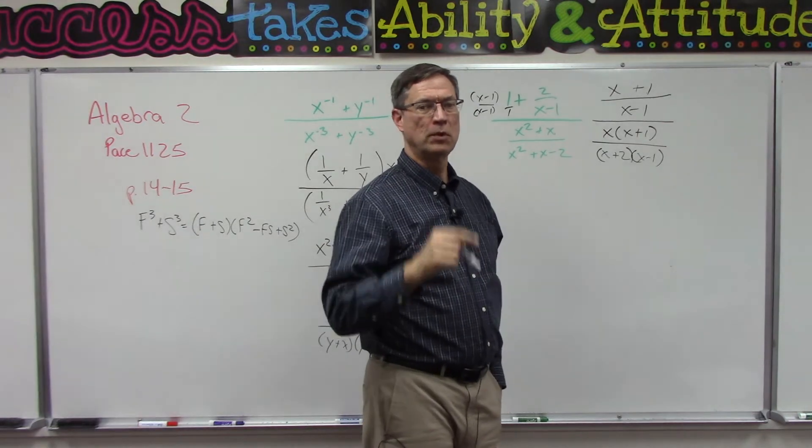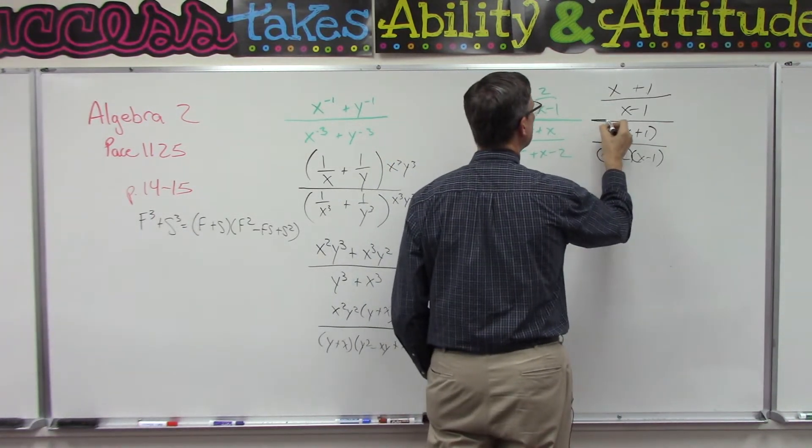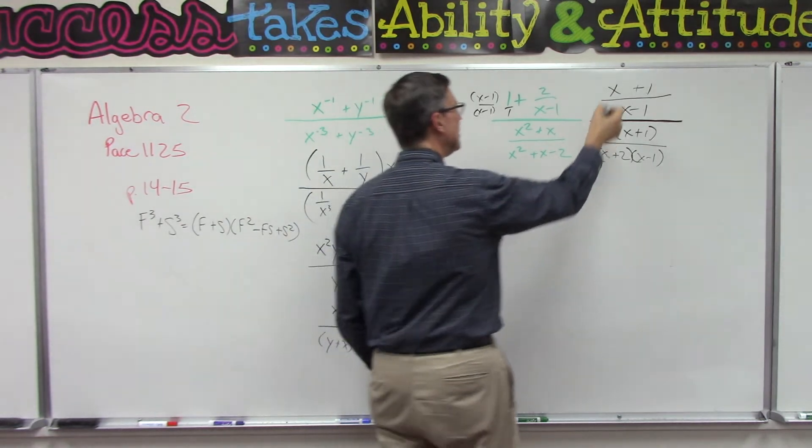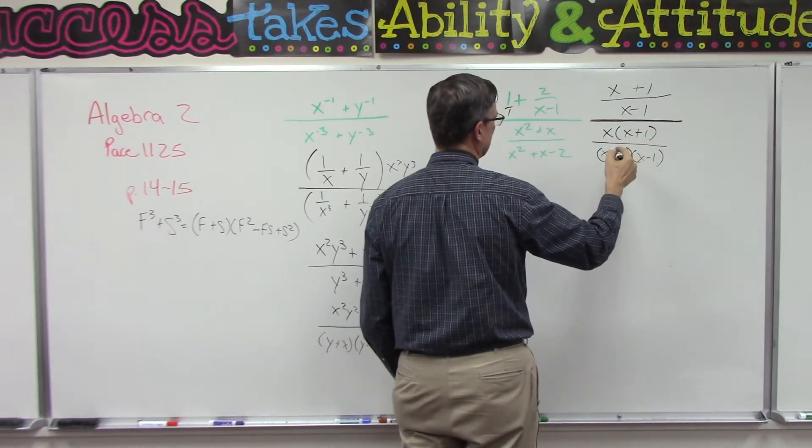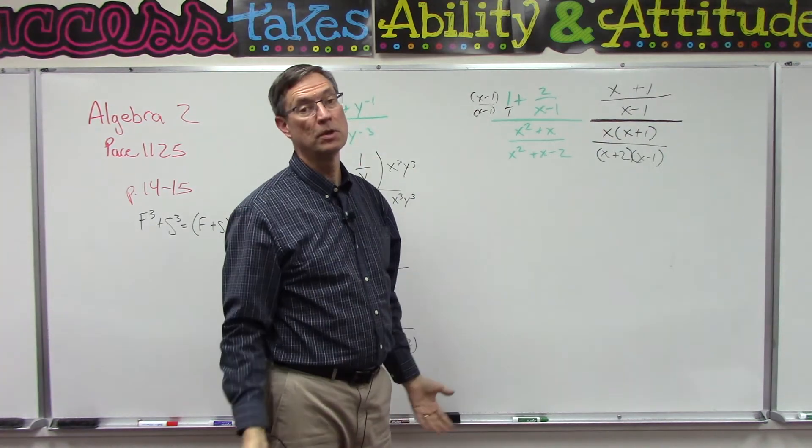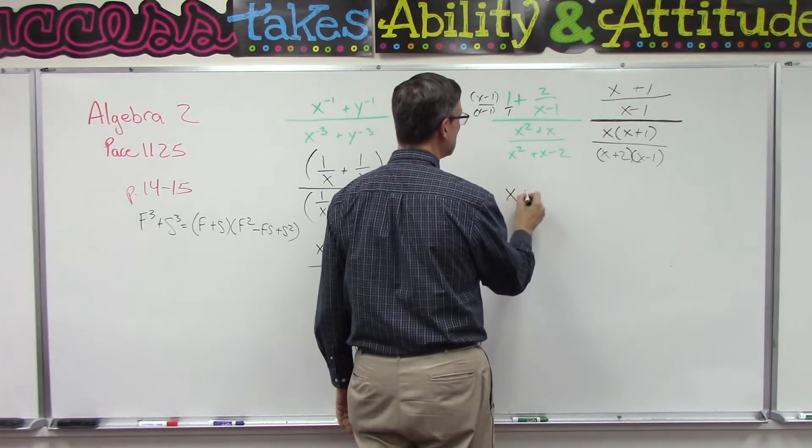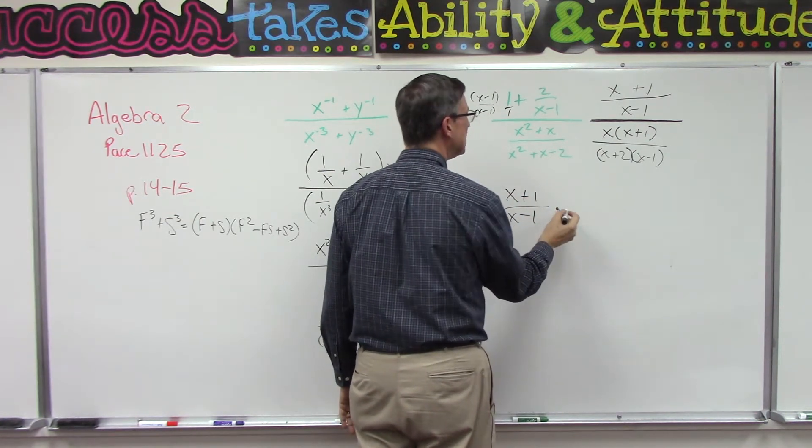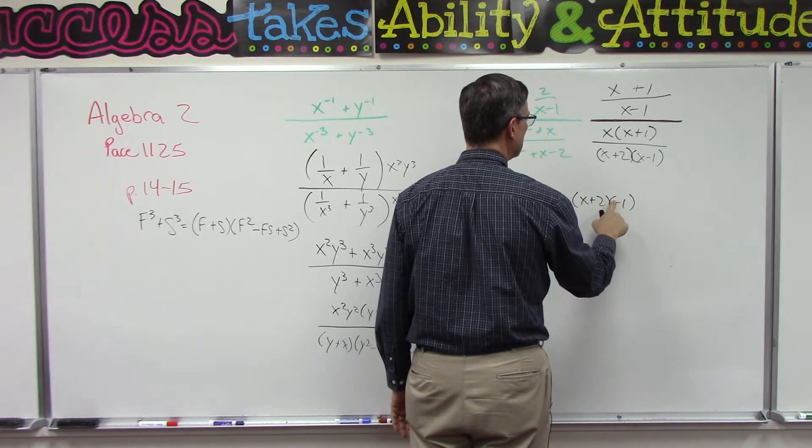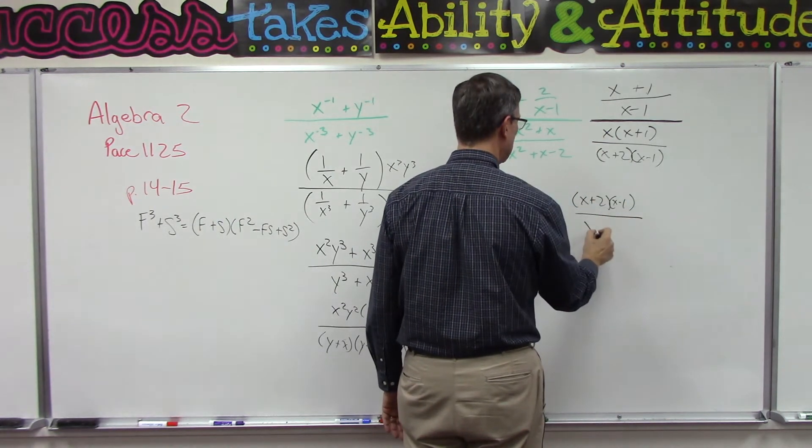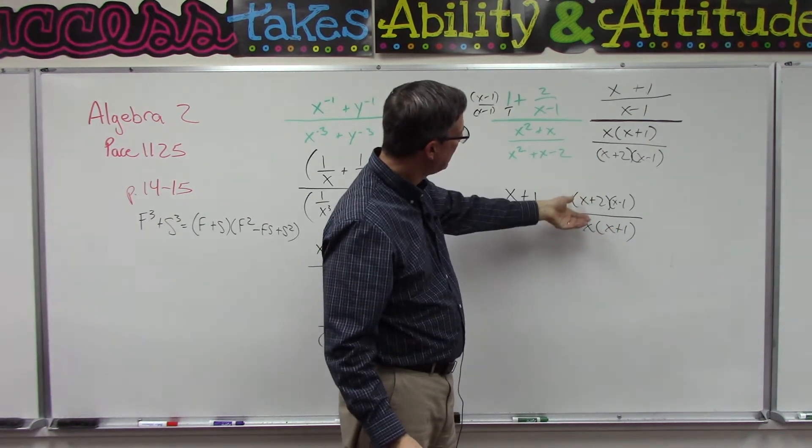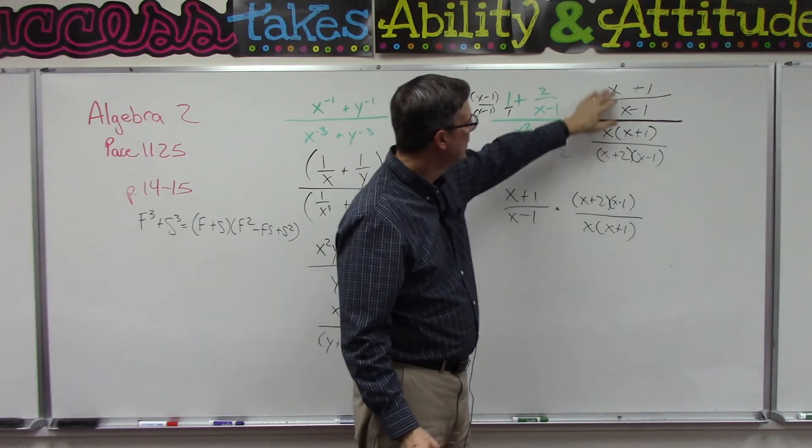Now I know this looks confusing, we have all these things stacked on top of each other. This division right here, this line is the same thing as saying divided by. All right, so I could say this divided by this. But remember what the rule is when you're dividing by a fraction? You take the second one, flip it upside down, and then you can multiply. So let me write X plus one over X minus one times, I'm going to flip this upside down, X plus two over X minus one, all over X times X plus one. So I flipped this upside down, that's what this is, and now instead of this divided by this, I'm multiplying.